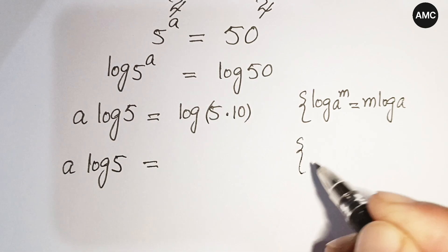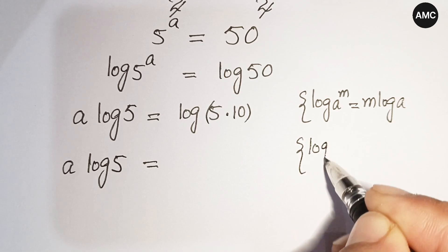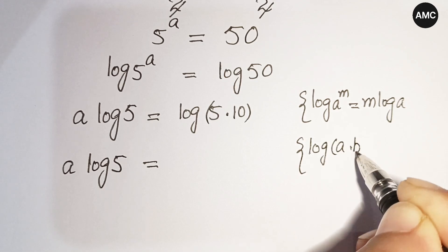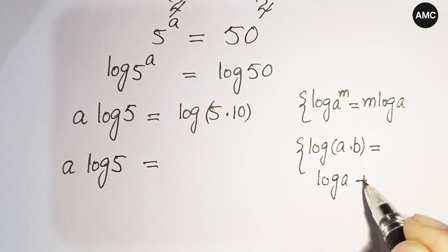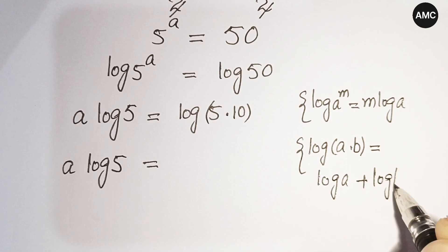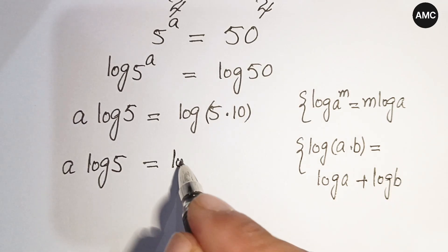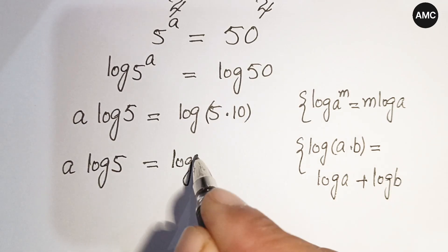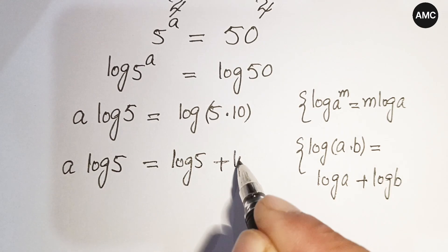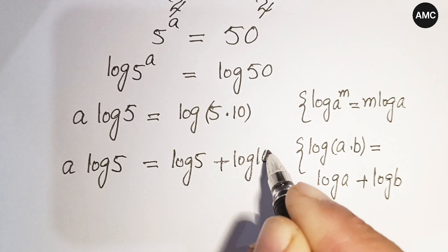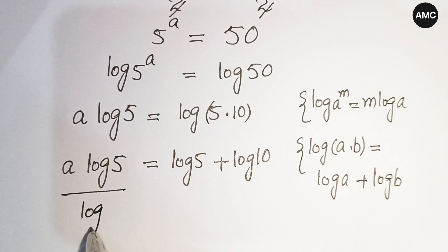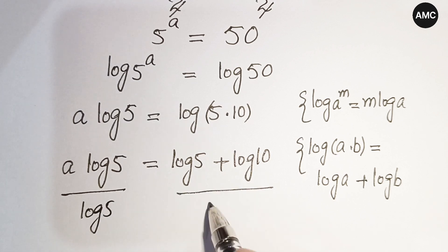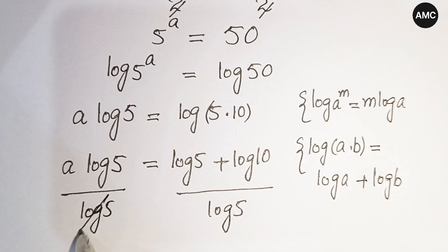By the logarithm product law — log(a times b) equals log a plus log b — we can write log(5 times 10) as log 5 plus log 10. So we have a times log 5 is equal to log 5 plus log 10.